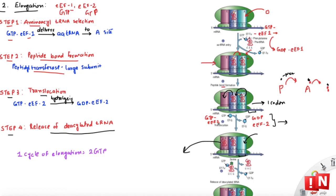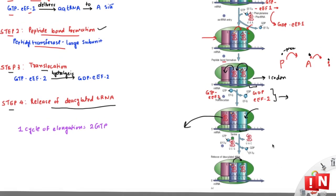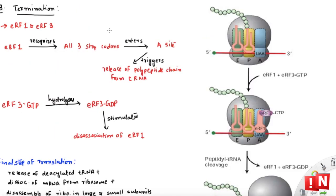Step four is release of the deacylated tRNA from the E site. Simultaneously, a new aminoacyl tRNA is added at the A site. This elongation cycle — tRNA selection, peptide bond formation, translocation, tRNA release — repeats, adding one amino acid per cycle. Each cycle uses two GTP molecules, one for eEF1 and one for eEF2.